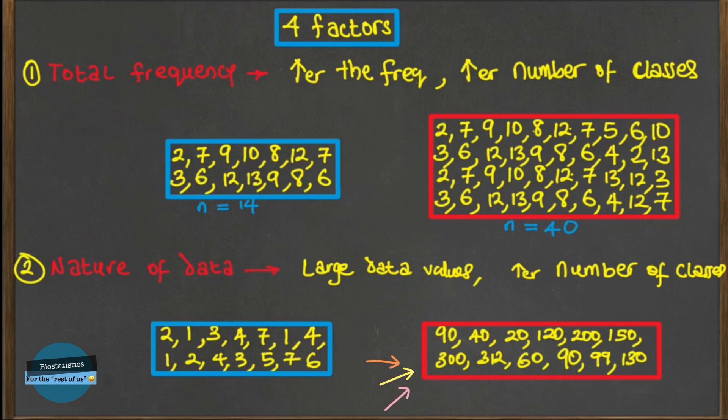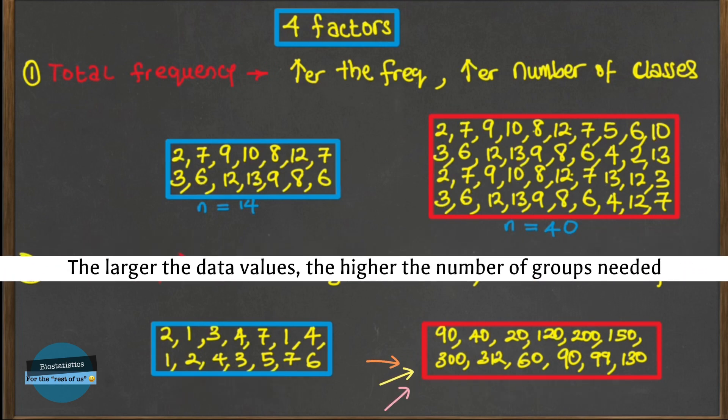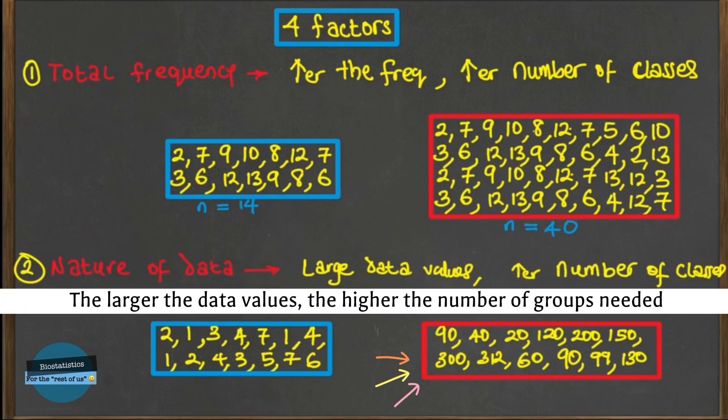The second data set should have more groups. Generally, remember this: the larger the data values, the higher the number of groups that will be needed to represent your data properly.